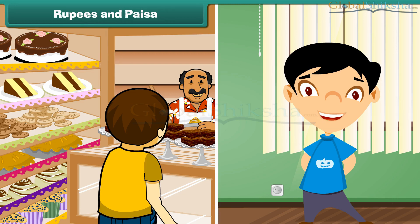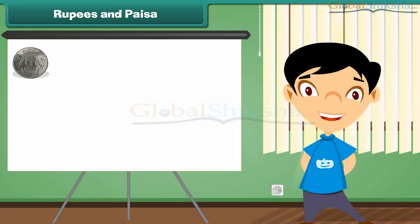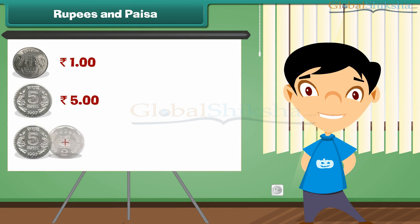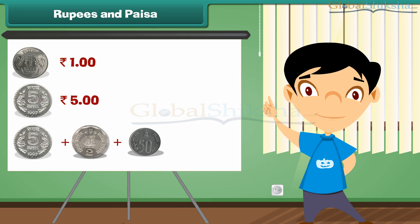Let me show the correct way to write the price told by a shopkeeper. 1 rupee is written as Rupee 1. 5 rupees is written as Rupees 5. 7 rupees and 50 paise is written as Rupees 7.50.